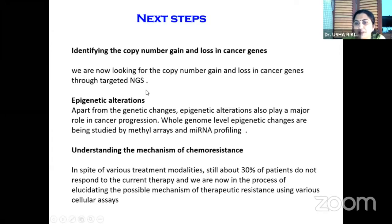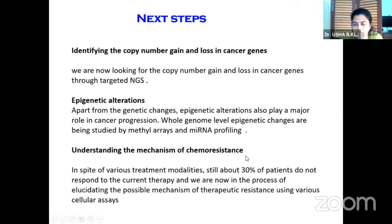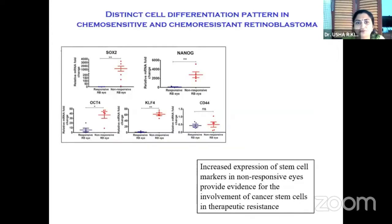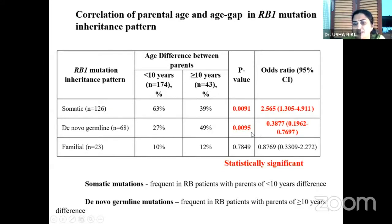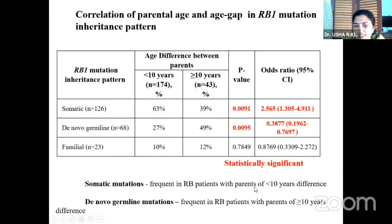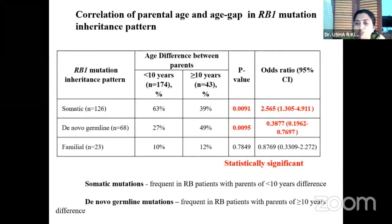We then started identifying copy number gain and loss. Apart from genetic changes, epigenetic alterations are also relevant — whole genome level epigenetic changes are being studied. We also try to understand the mechanism of chemoresistance, especially in cases resistant to treatment. There is a distinct cell differentiation pattern in chemosensitive and chemoresistant retinoblastoma — increased expression of stem cell markers in non-responsive eyes provides evidence for involvement of cancer stem cells in therapeutic resistance. Somatic mutations were frequent in RB patients with parents with an age difference of less than 10 years, while de novo germline mutations were frequent in RB patients with parents with an age difference of more than 10 years.